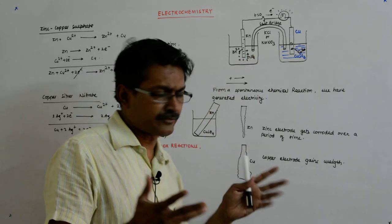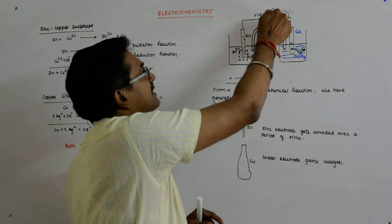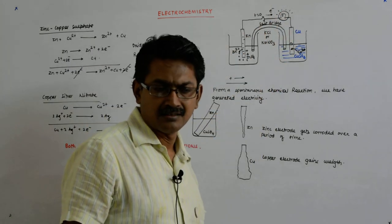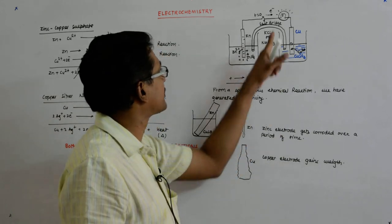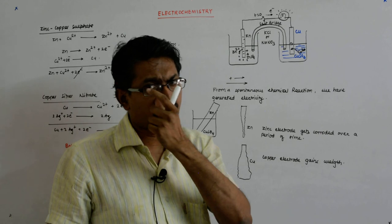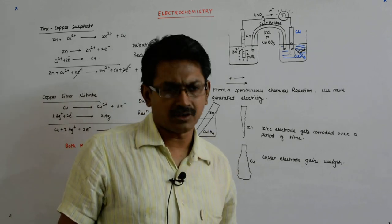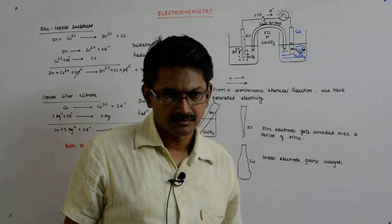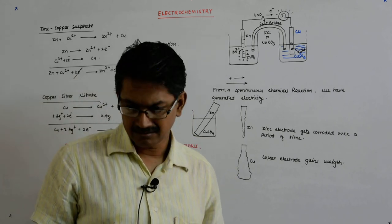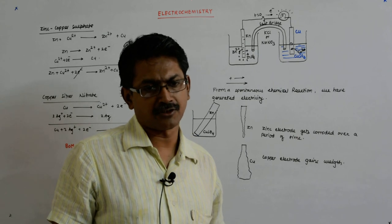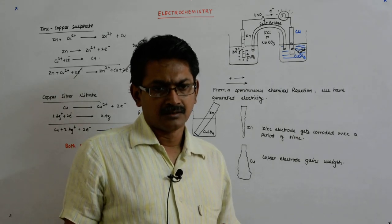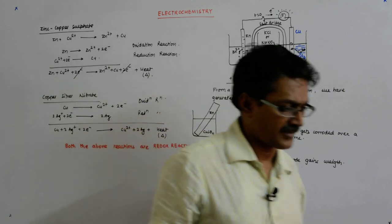So that heat which was getting generated here is now getting generated here. You understand? That heat is now getting generated here, so we have been able to convert it into useful work. And that is the philosophy behind a cell—that is the philosophy behind a cell.